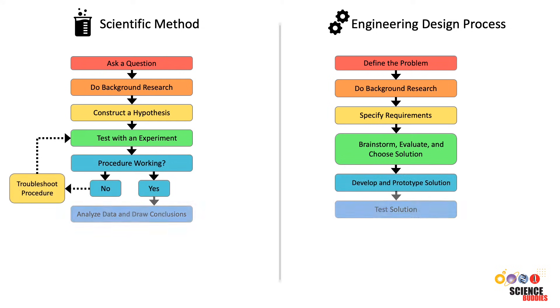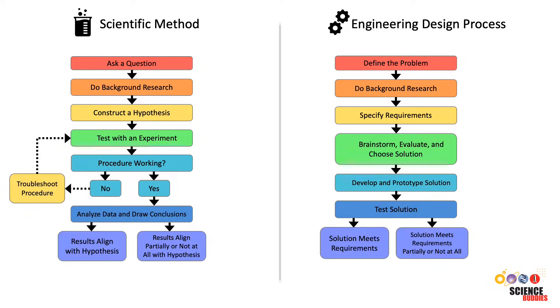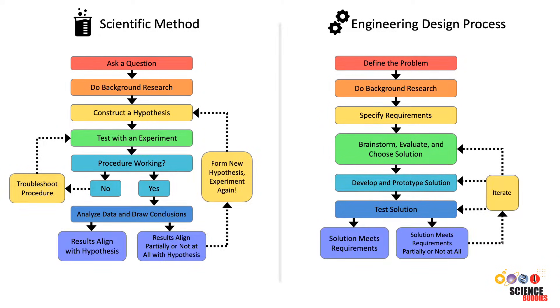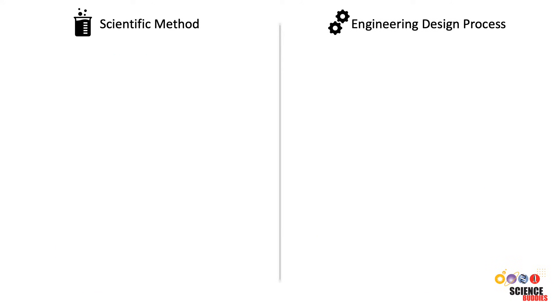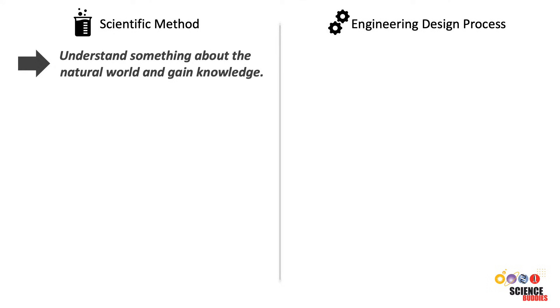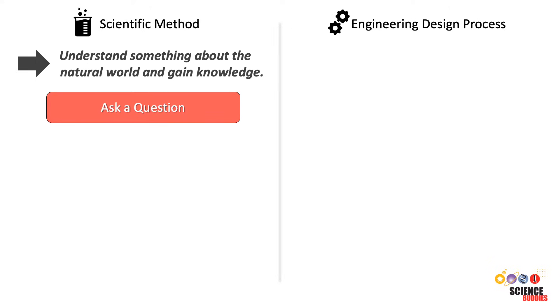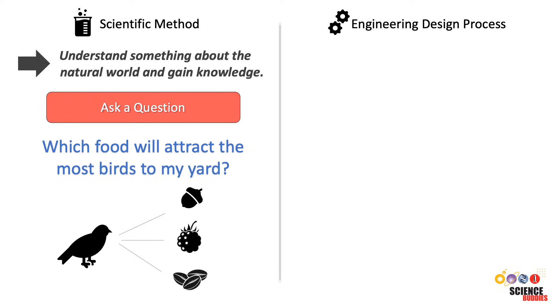Let's go step by step and compare how we could use these two approaches for our project about feeding birds. As we go through the steps, you will notice that there are similarities and differences between the two. When using the scientific method, the goal is to understand something about the natural world and gain knowledge by asking a question and experimenting to find the answer. In our bird watching example, the question might be: which food will attract the most birds to my yard?